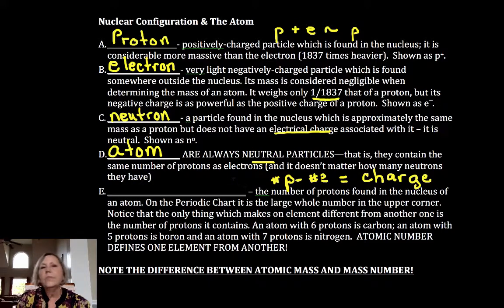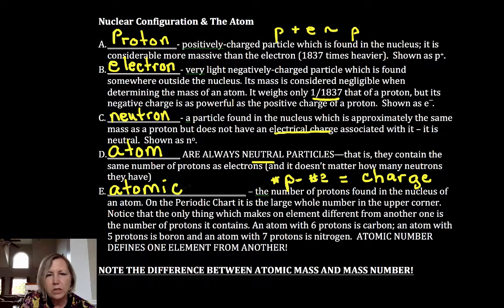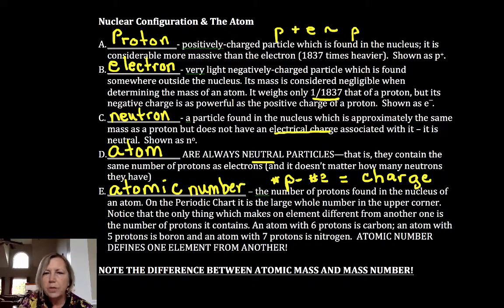There is a number on the periodic table that tells you your number of protons and that's called the atomic number. It's going to be the smaller of the two. If you change atomic number, you change elements, so that atomic number defines the element.